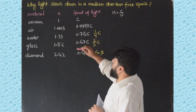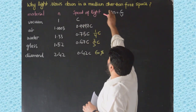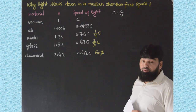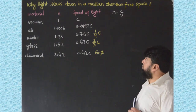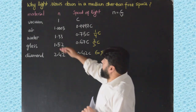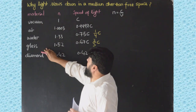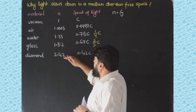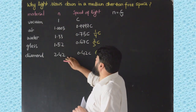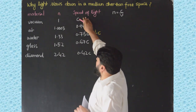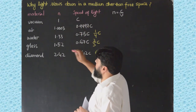In this video we will discuss why light slows down in a medium other than free space. We know that if we consider some materials and their respective refractive indices, these will be the corresponding speeds of light in those media.